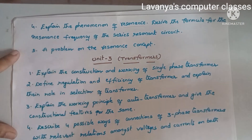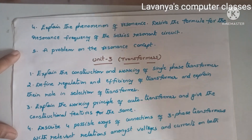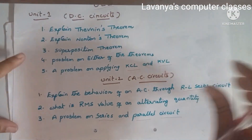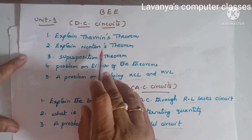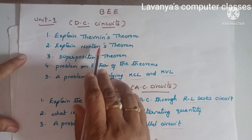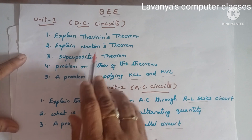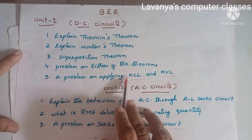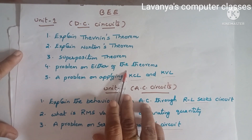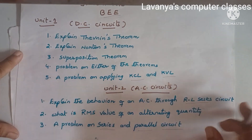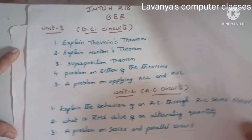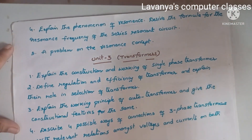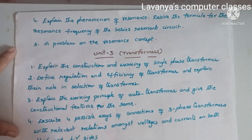In Unit 1 also, we learned all the theorems and problems came from those theorems. Problems are coming concept-wise. If you are more solid on concepts, automatically problems also become very easy.